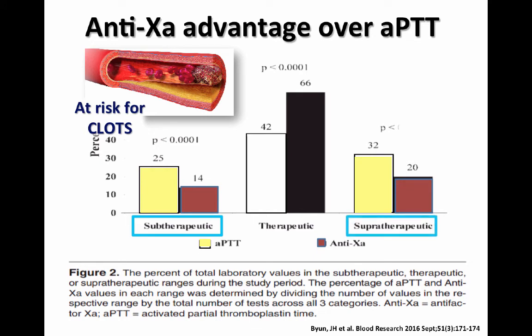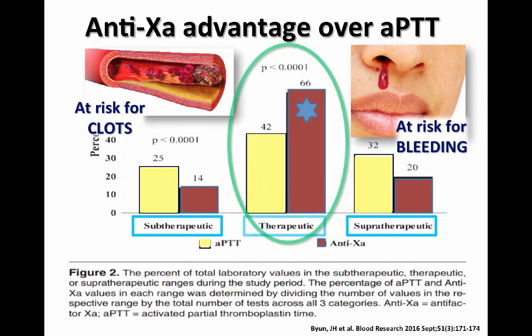On the right-hand side, comparing the PTT to the anti-Xa, more patients were measuring in the supratherapeutic range with PTT versus anti-Xa, meaning those patients were at risk for bleeding. The middle bar graph shows patients whose PTT and anti-Xa were in the therapeutic ranges for monitoring, and you can see that the anti-Xa resulted in the therapeutic range more often than PTT. Comparing PTT measured patients in the subtherapeutic and supratherapeutic ranges more often, and less often in the therapeutic range.